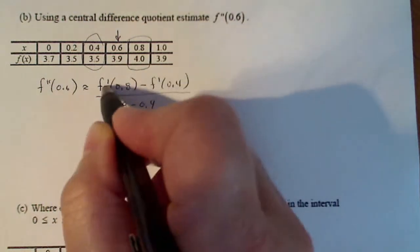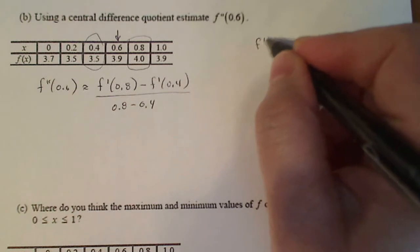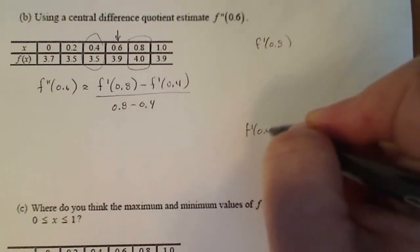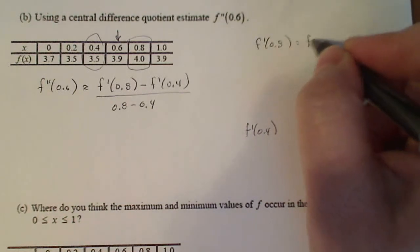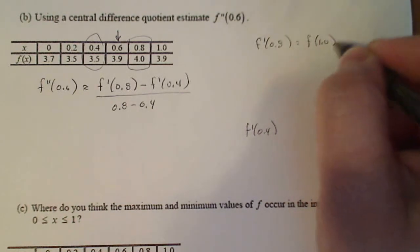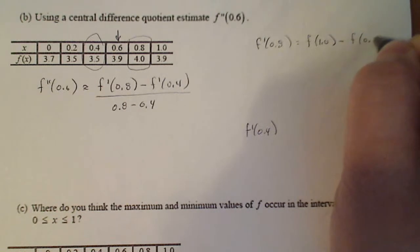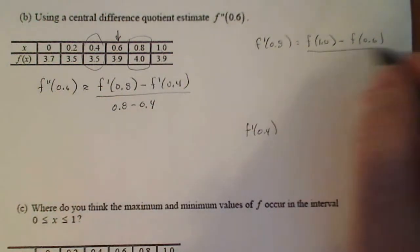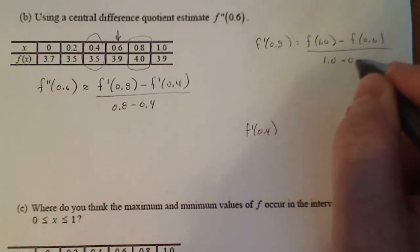So that means I have to estimate these two, f prime of 0.8 and f prime of 0.4 like we did in part B. So this is going to be f of 1.0 minus f of 0.6 because 0.8 lies between those two, all divided by 1.0 minus 0.6.